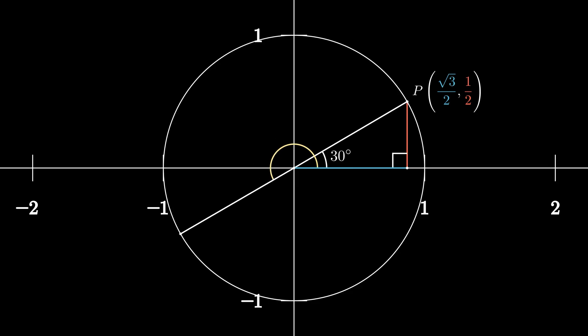Now, watch what happens when we go to 210 degrees, which is the same angle as 30 degrees, but rotated into third quadrant. The shape of the triangle stays the same. But now, both x and y are negative. That means the coordinates at 210 degrees are minus root 3 over 2 comma minus 1 half.